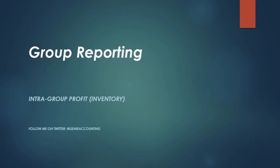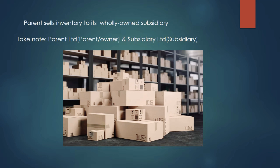Today we're going to be looking at group reporting. The point of this tutorial is to show you how to generalize the consolidated journal for intergroup transactions. We're going to be looking at inventory. In this example, the parent sells inventory to its wholly owned subsidiary. Parent Ltd is the actual parent or owner, and Subsidiary Ltd is the actual subsidiary buying inventory from the parent in this group transaction.